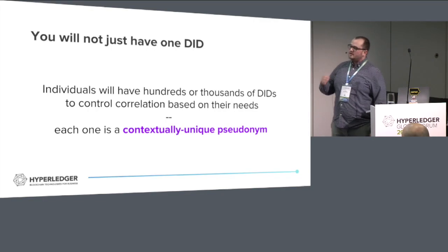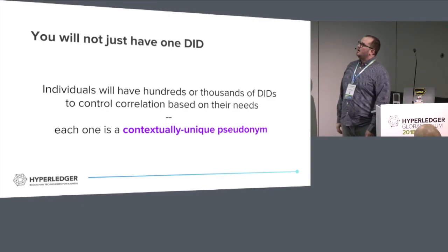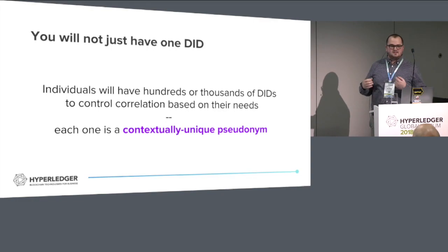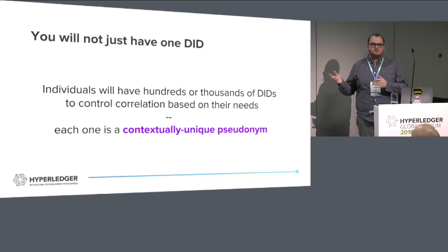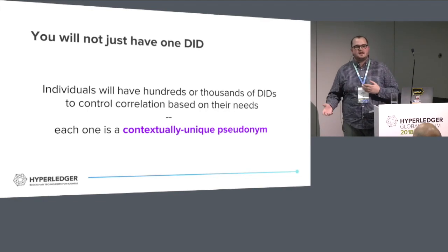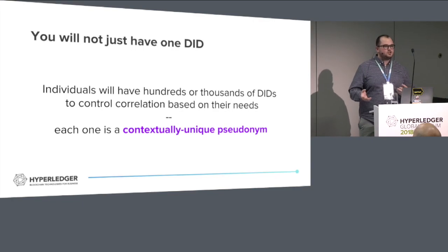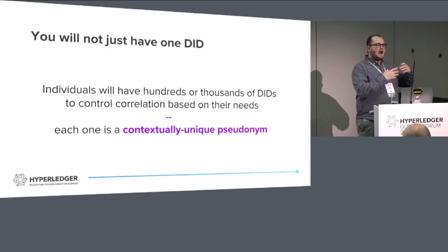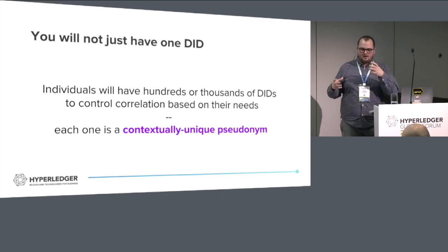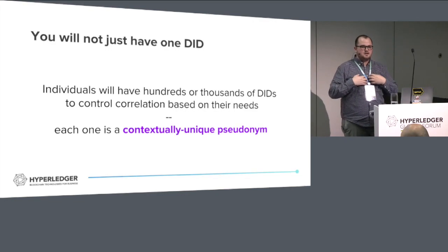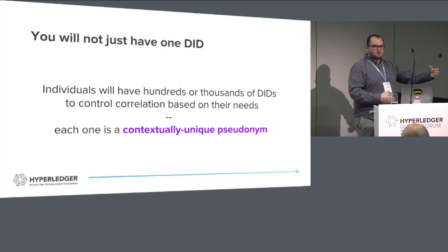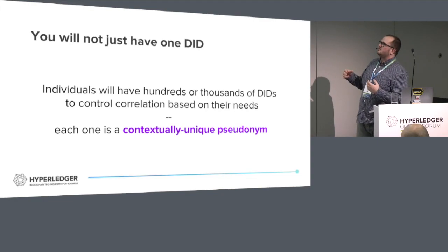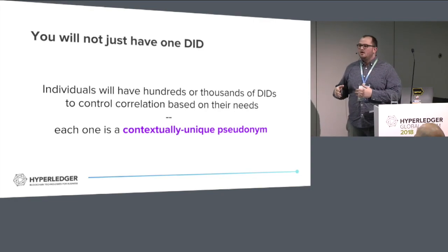What's interesting about Sovrin and a large portion of the self-sovereign identity space is that DIDs are not just one single identifier - they are contextually unique. You will have basically pseudonyms for many different relationships. A DID represents a relationship - the connection between two independent entities. That relationship doesn't have to exist between two people; it can exist between me and an IoT device, or an organization and an organization, or IoT device to IoT device.